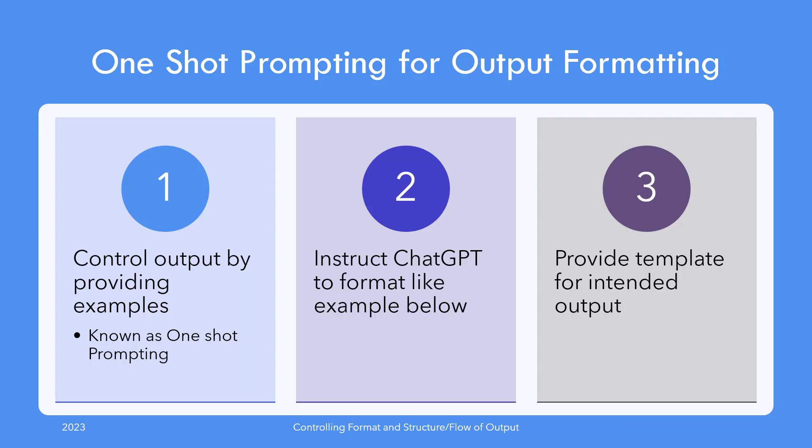A useful technique to generate intended output is by examples. This is formally known as one-shot prompting. In this technique, you provide a full example or template of intended output as input — for instance, you write a template or provide a full story in your prompt as an example, and then ask ChatGPT to use this as an example to come up with a story on a totally unrelated topic, and it would follow the same template to generate the answer.